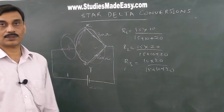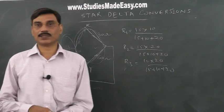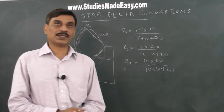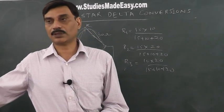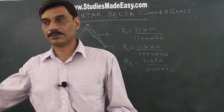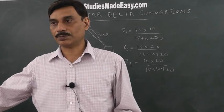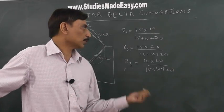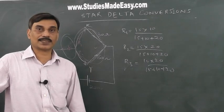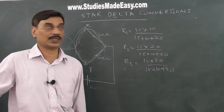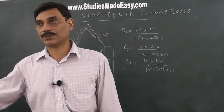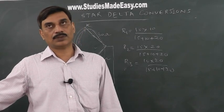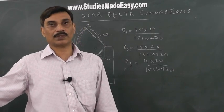You can use star-delta conversion not only for resistors — it can also be used for capacitors, inductors, and generally for impedance as well. Here we are doing it for DC circuits using resistors. Star-delta conversions allow you to solve the question efficiently.